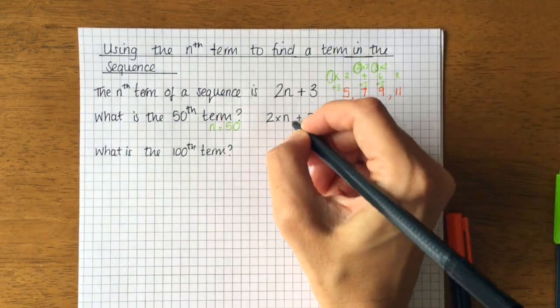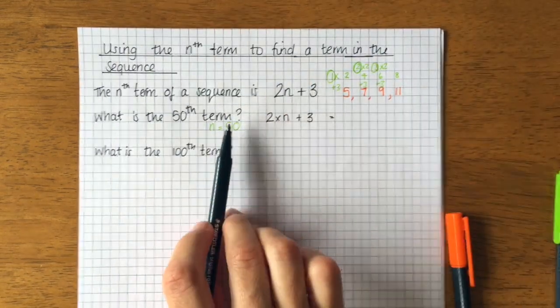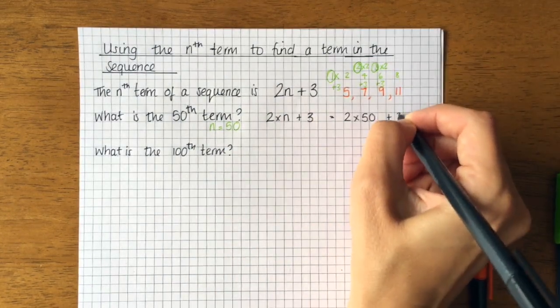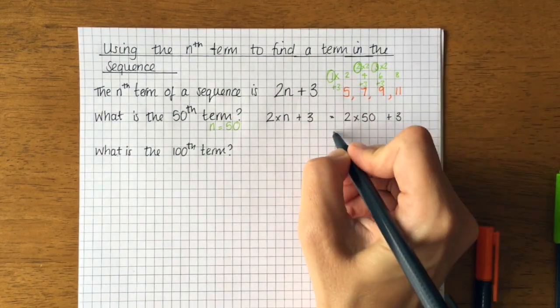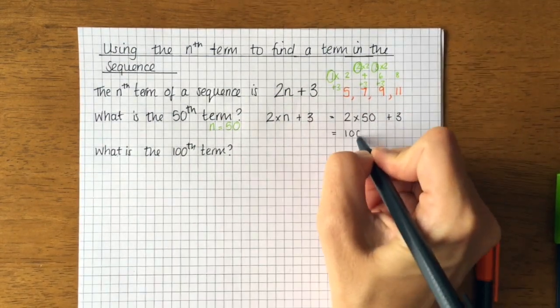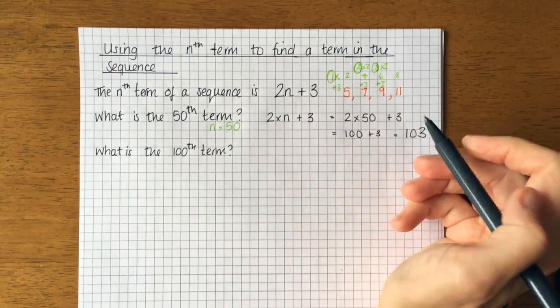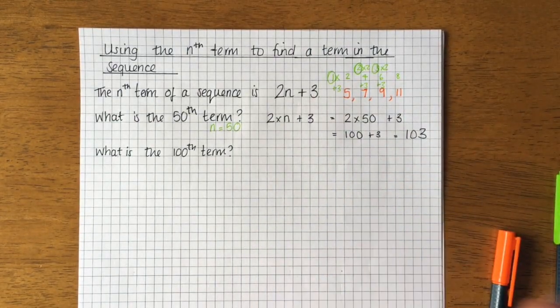So 2 times 50 plus 3. So 2 times 50 is 100, plus my 3 is 103. So the 50th term would be 103.